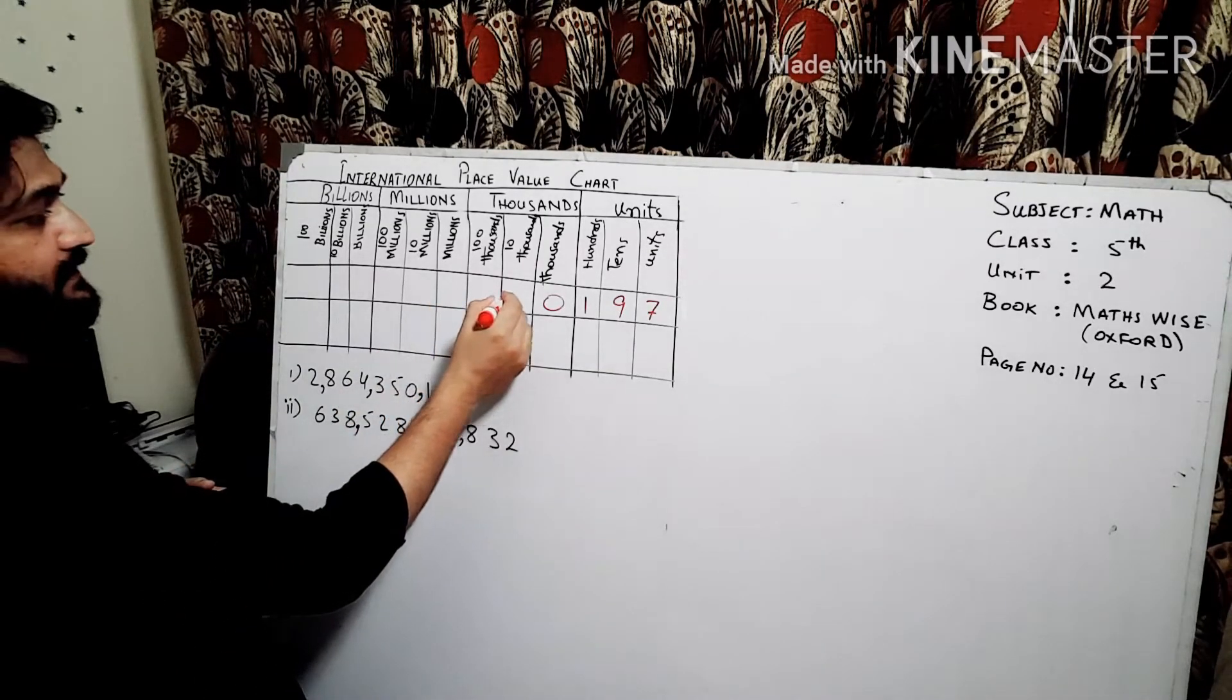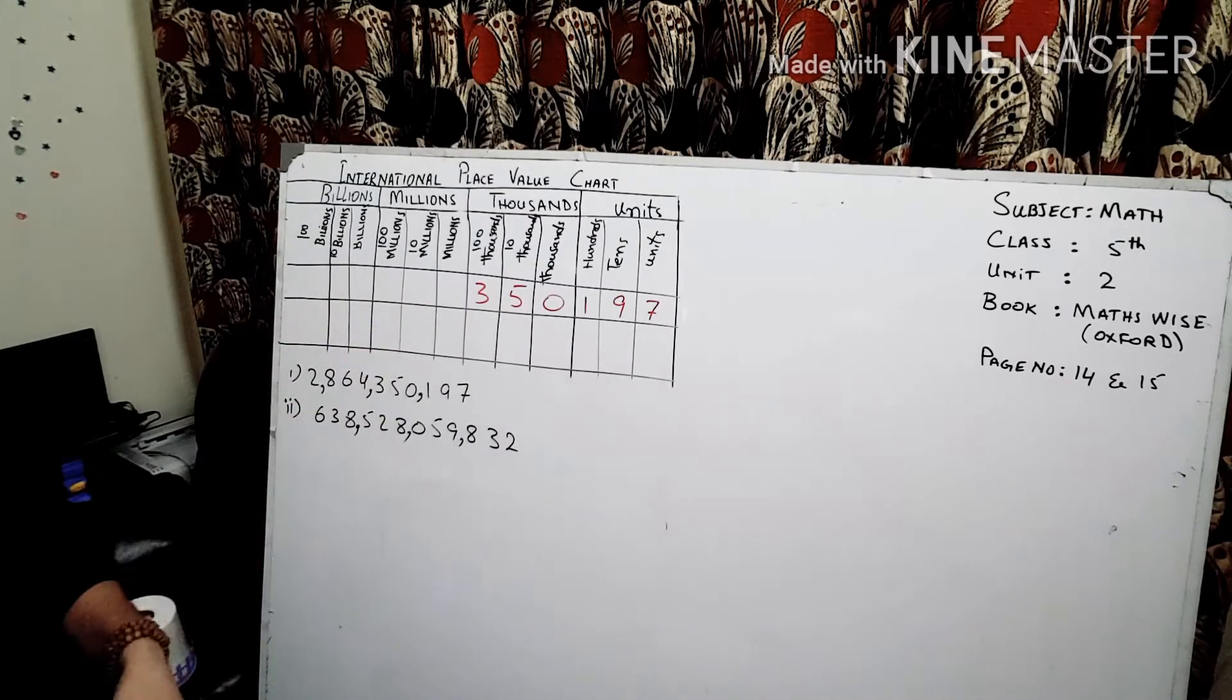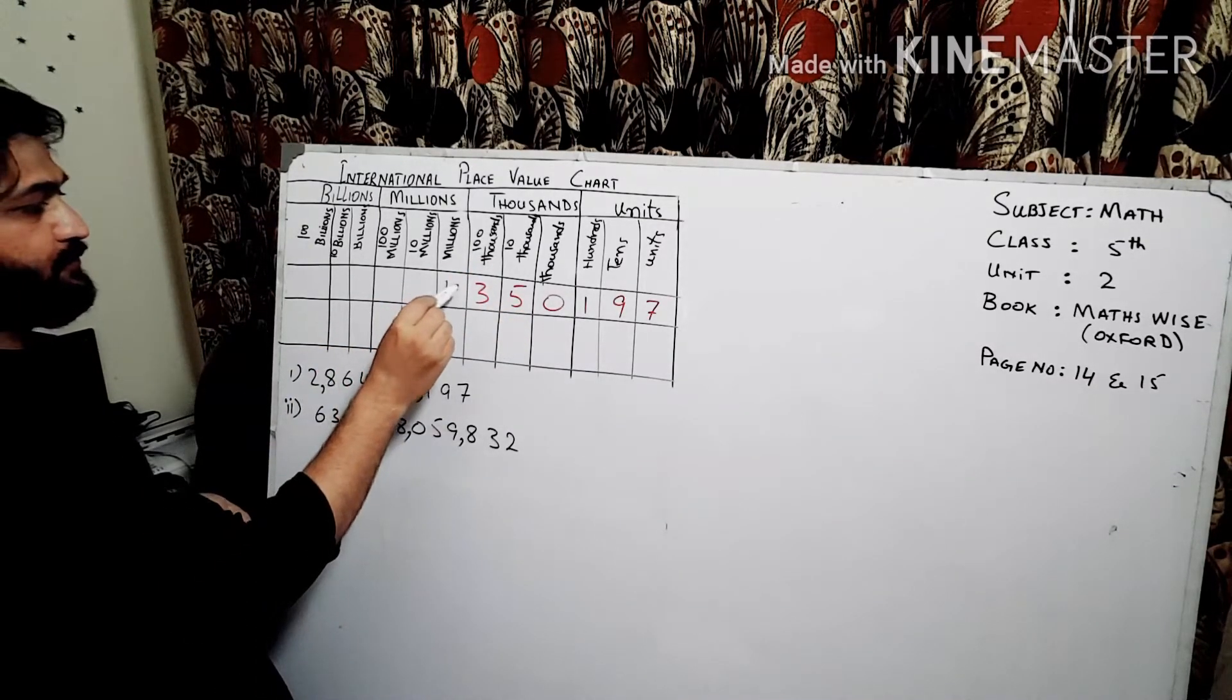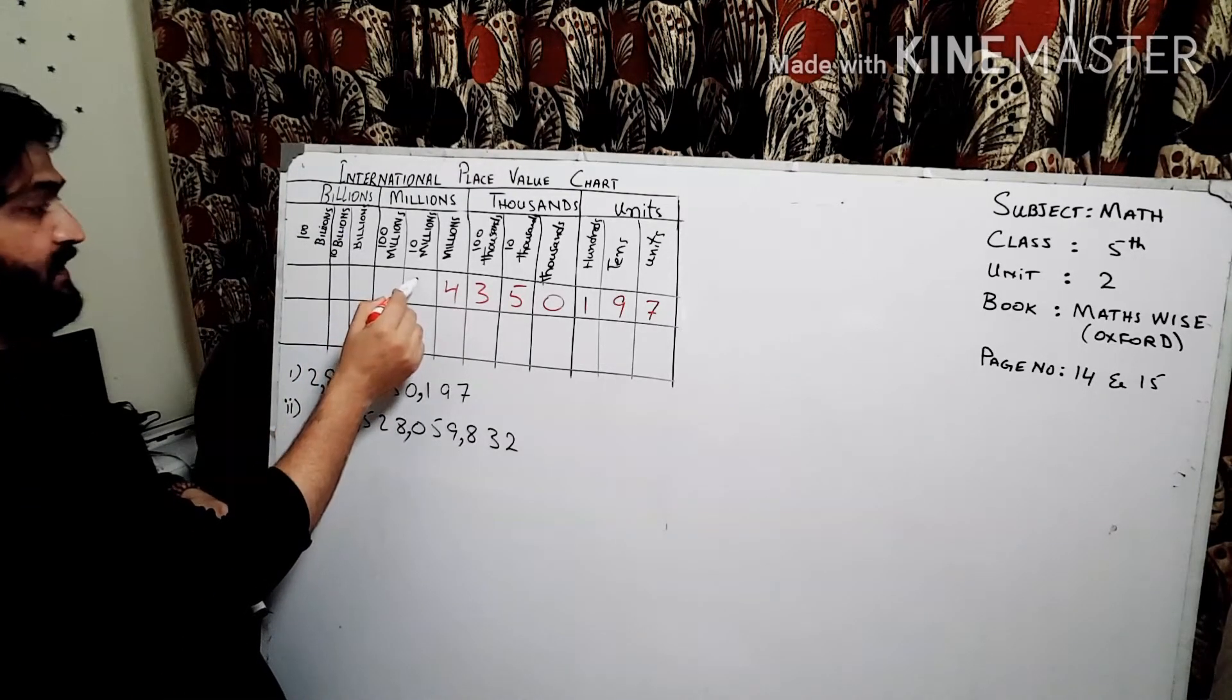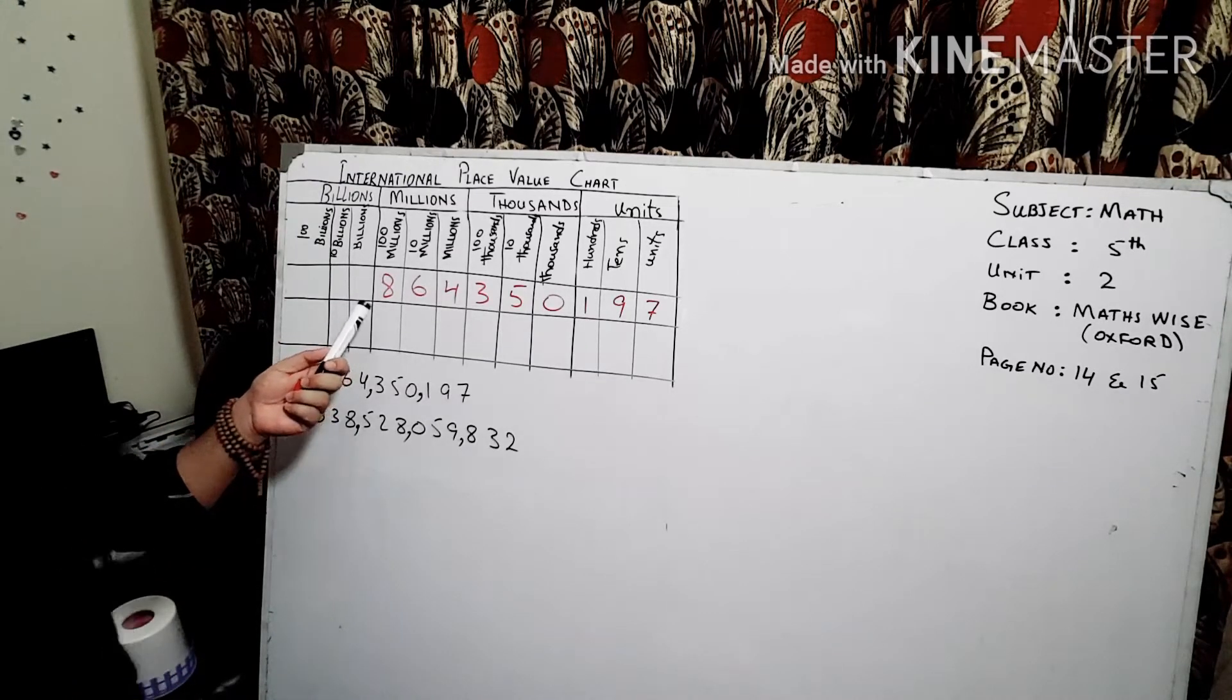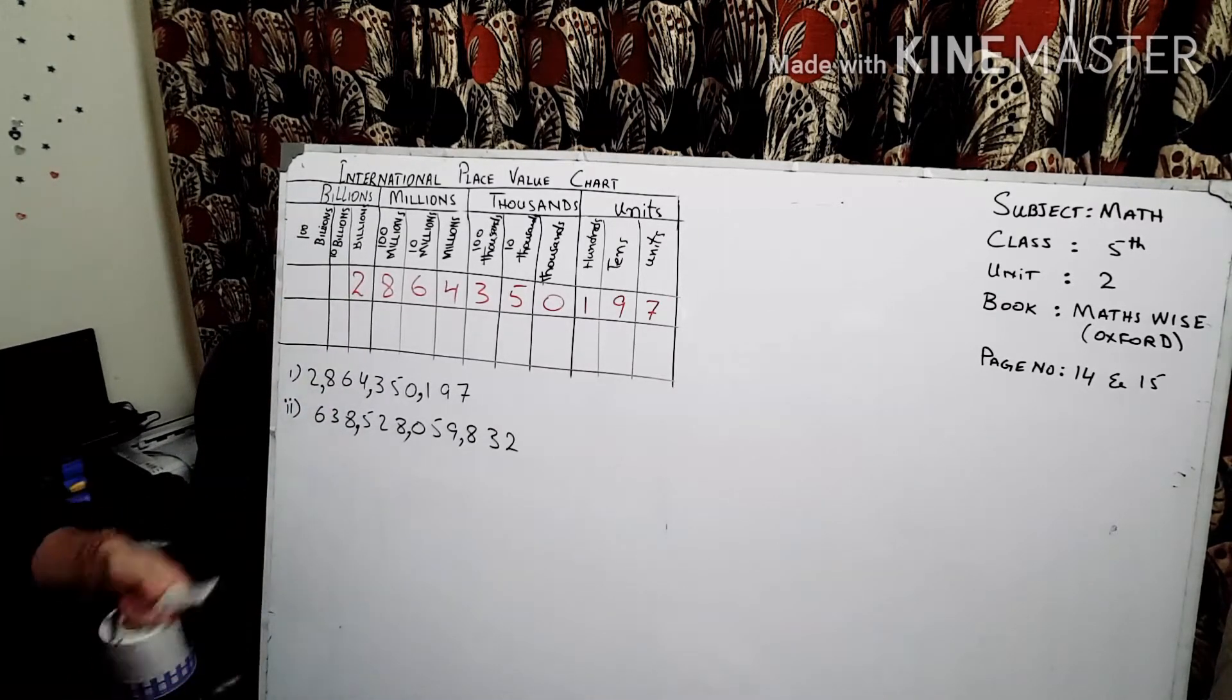Zero, so that means the thousands place only zero. Five is ten thousand and three is hundred thousand, so that means three hundred and fifty thousand. So if we just read this: fifty thousand. Next is four - four goes to millions place, and six goes to ten million, and eight goes to the hundred million. So by this: eight hundred and sixty four millions, and the last two go to the billion place.